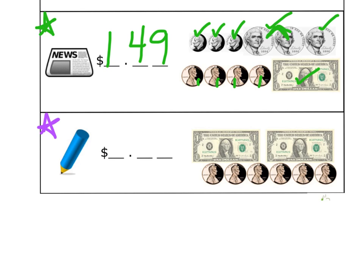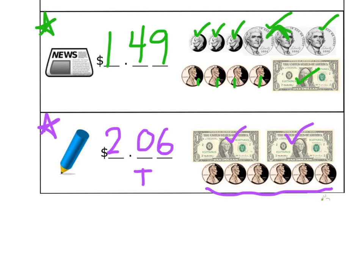And to buy the pencil, count up that money amount and write it down. I see two dollar bills, so there are two dollars. Then I have six more pennies — so that's two dollars and six cents. Hopefully you were careful here: six cents has zero tens and six ones, so you filled in the coin amount with a zero first and then your six. Two dollars and six cents.